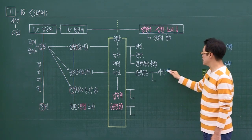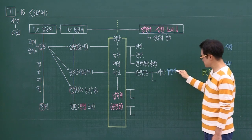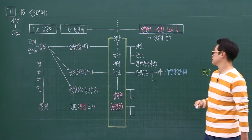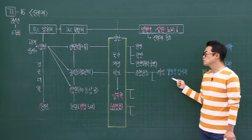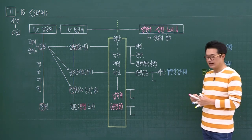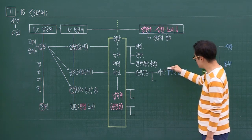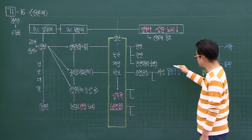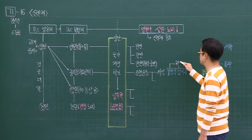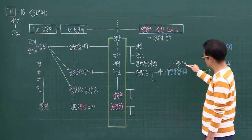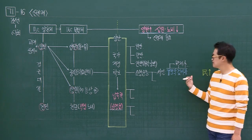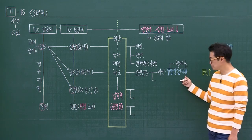그 대표적인 케이스가 규장각 검서관이에요. 정조가 바로 이렇게 서얼들을 적극적으로 등용하는 모습들이 있더라는 겁니다. 이 규장각 검서관 중에서 대표적인 인물로 실학자로 유명한 박제가라는 인물이 있습니다. 이런 인물들이 서얼 출신의 규장각 검서관으로 활동하면서 정조의 총애를 받고 있었다는 거 기억해 주시면 되겠습니다.